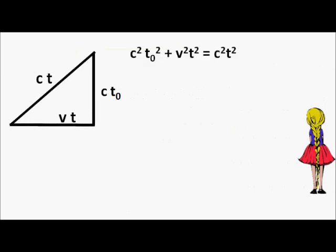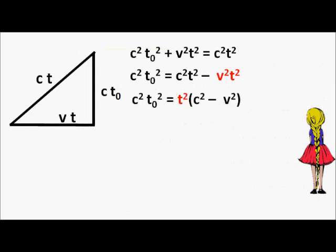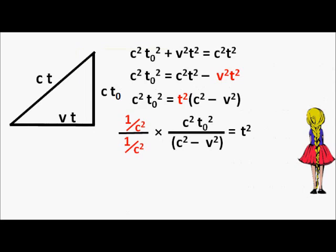Applying Pythagoras's theorem: I take the length of the base squared, add it to the square of the height, and that equals the square of the hypotenuse. I subtract v squared t squared from both sides, then take out t squared as a common factor. Then I divide both sides by c squared minus v squared. Now I'm going to change the way I express that fraction by multiplying by one — expressed as one over c squared divided by one over c squared — which won't change the value.